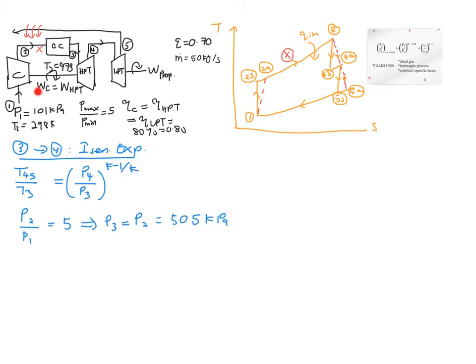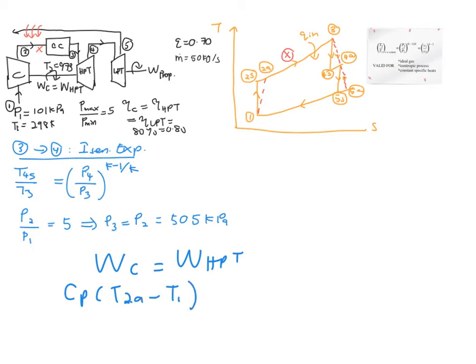From the relation between the high pressure turbine and the compressor, the work of the compressor equals the work of the high pressure turbine. Expanding this: CP(T2A − T1) = CP(T3 − T4A), considering actual values since this is happening in a marine engine. Since CP is the same on both sides, it cancels out, leaving T2A − T1 = T3 − T4A.